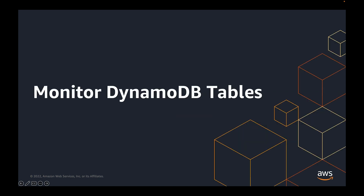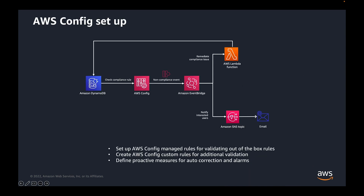Let's continue with how to monitor your DynamoDB tables. You can define your compliance rules and standards using managed and custom rules in AWS Config and define proactive measures such as triggering a notification or remediating an issue. AWS Config checks for compliance rules when a table is created or modified. When a non-compliance event is detected, EventBridge can either trigger a Lambda function to remediate an issue or send a notification to an SNS topic.